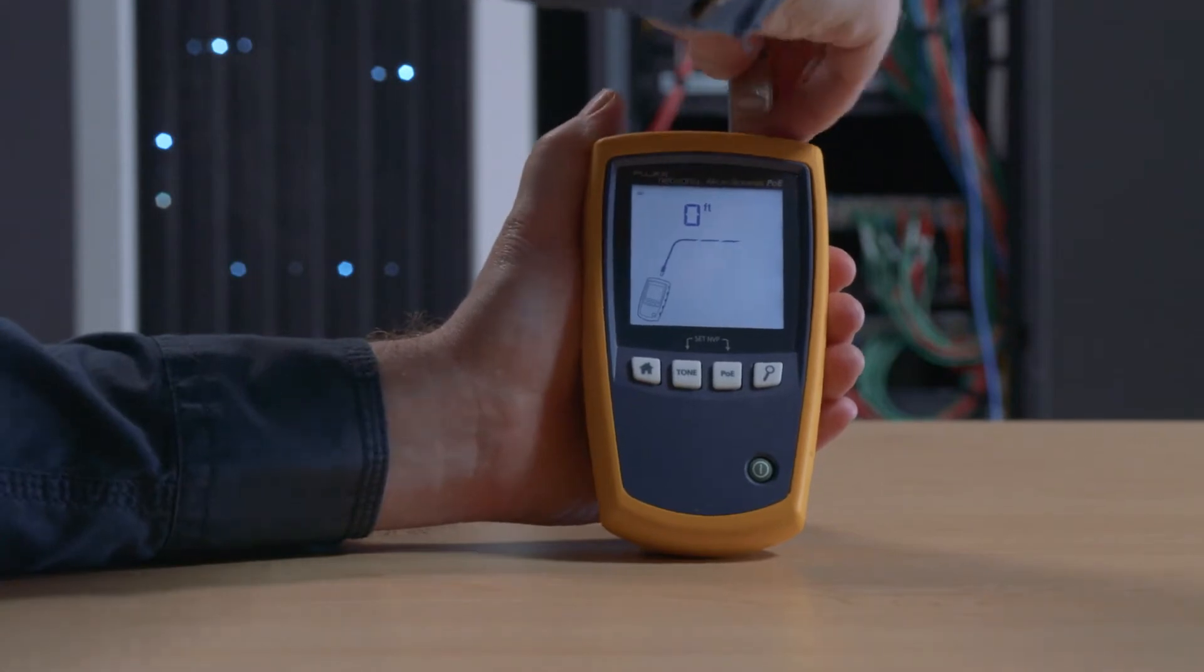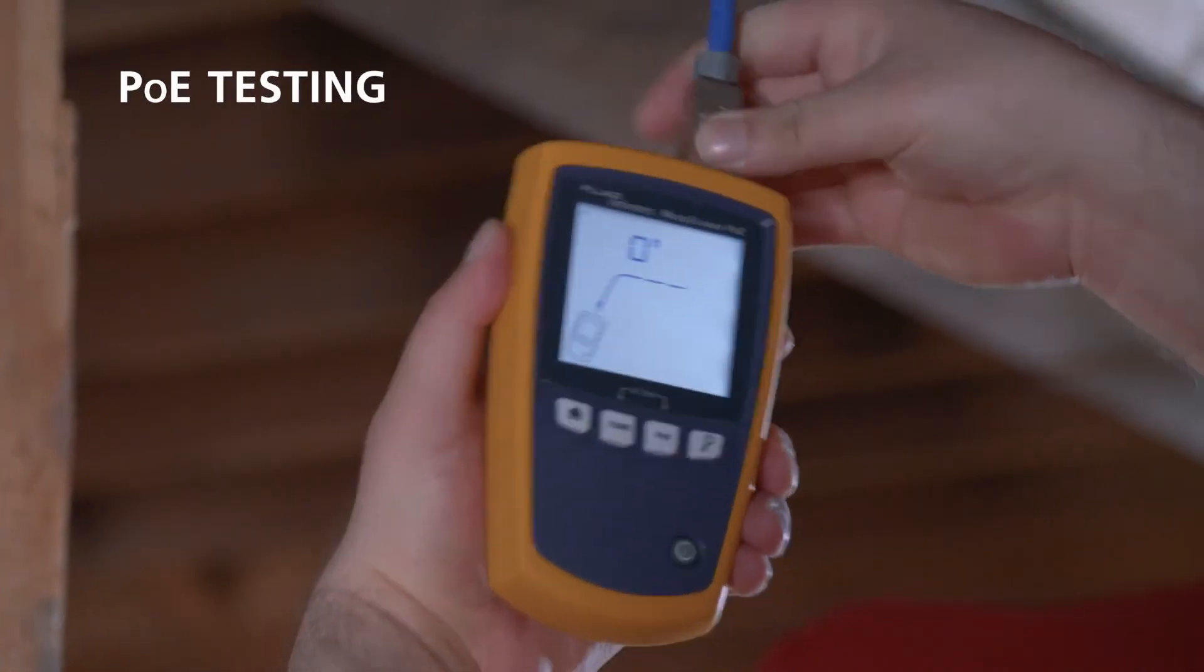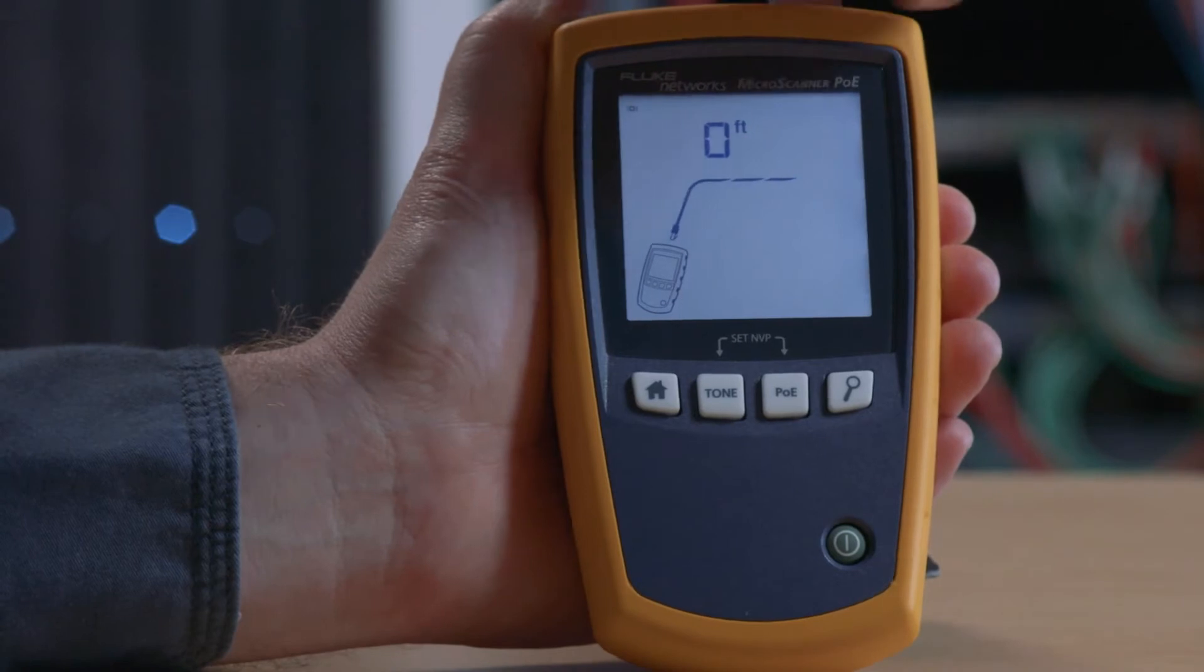Discover whether there's an Ethernet switch at the far end and how fast it is, up to 10G. Know almost instantly if power over Ethernet is available. The Microscanner PoE goes even further.